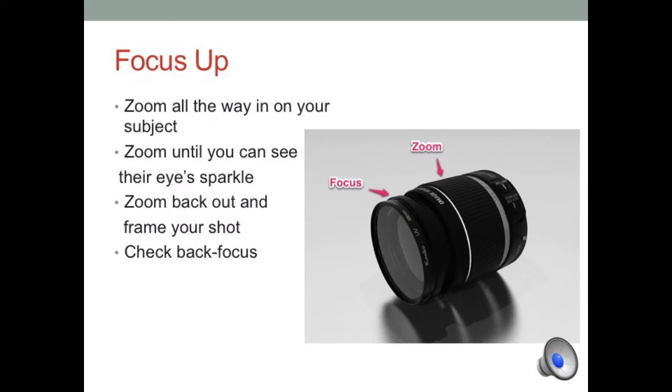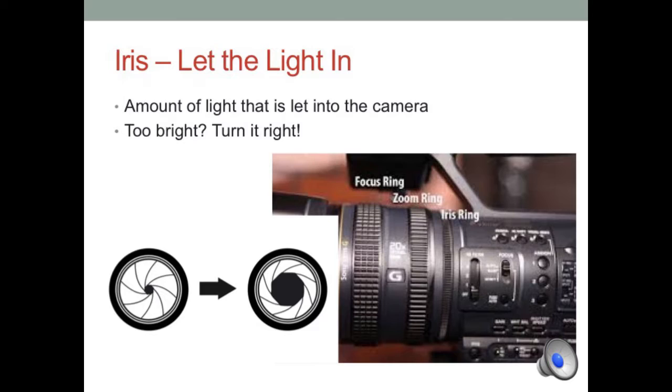Now that everybody's focused up, we'll go to the second thing. Talking about the iris now. The iris is, depending on your camera, the ring closest to the body of the camera on the lens.